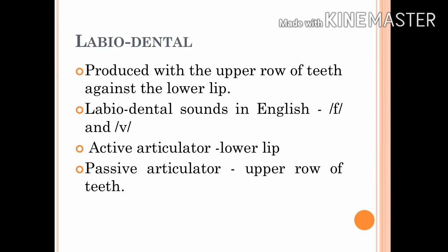Labiodental sounds are produced with the upper row of teeth against the lower lip. The lower lip is the active articulator and the upper row of teeth is the passive articulator. There are two labiodental sounds in English: F as in 'fish' and V as in 'van'.